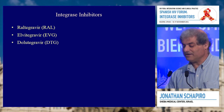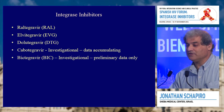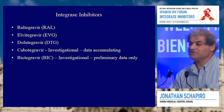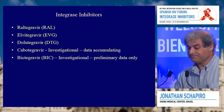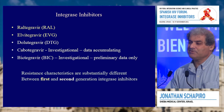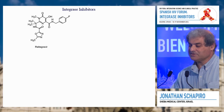We have three approved integrase inhibitors: raltegravir, elvitegravir, and dolutegravir, and two investigational. We have quite a bit of data on cabotegravir, including clinical data, and now we have some preliminary data on bictegravir. Since both are in advanced clinical development, I will discuss them as well. I think we can divide this into first and second generations, and their resistance characteristics are different, which has clinical significance.